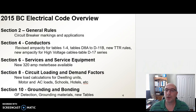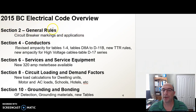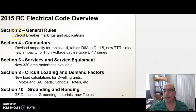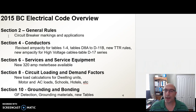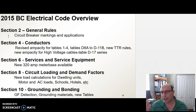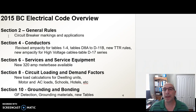Now let's get into the changes for the 2015 Canadian Electrical Code. In Section 2 — the general rule, which pertains to any section in the code — the big change is circuit breaker markings and application. Circuit breakers have to be marked with a slash rating. If you're using a circuit breaker on a 120/240, 347, or 600-volt service, the breaker must be marked 120/240 or 347/600. If you're using a circuit breaker on a delta system, which is an ungrounded system, they must be marked 240, 480, or 600 volts — you must see the phase-to-phase characteristics on that circuit breaker.